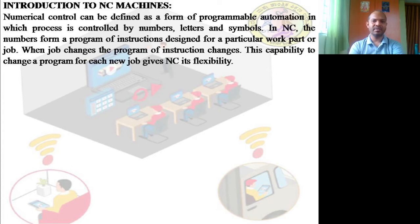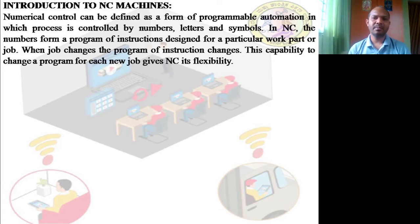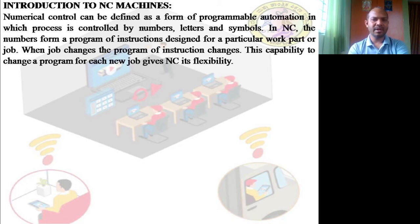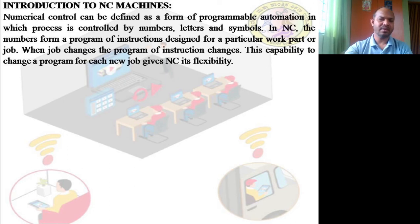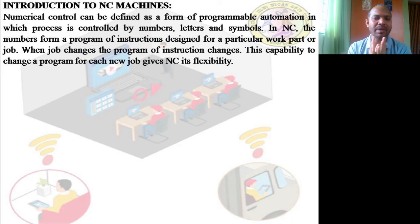Now let us look at numerical control machines, also called NC machines. Numerical control is defined as a form of programmable automation in which the process is controlled by numbers, letters, and symbols. These numbers form a program of instructions designed for a particular part or job. When the job changes, the program of instructions changes, giving NC its flexibility. Programs are written using numbers from 1 to 99, different letters, and symbols.